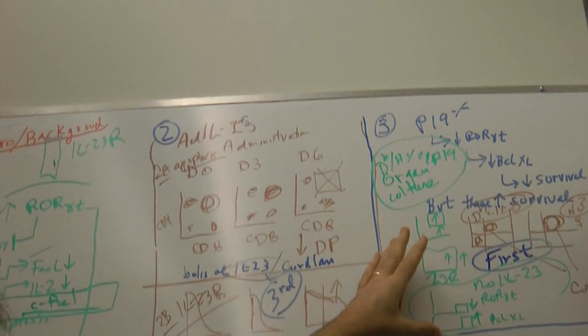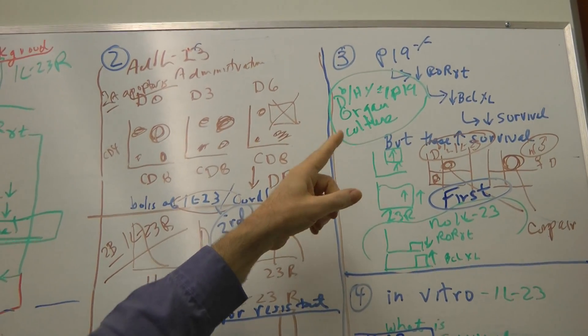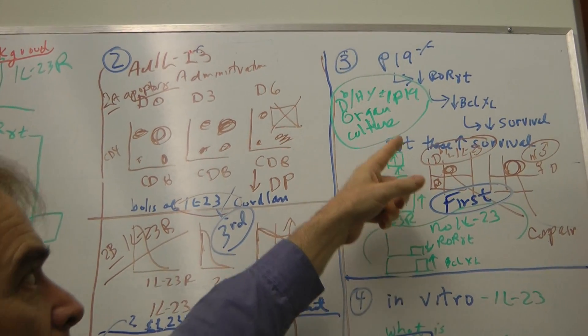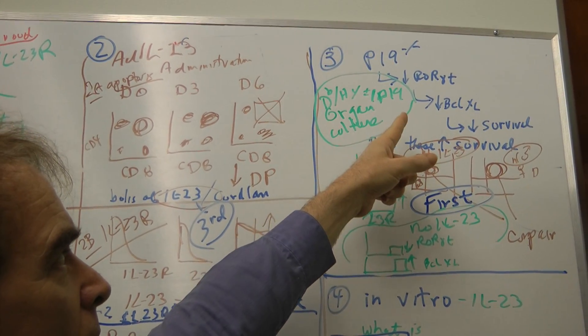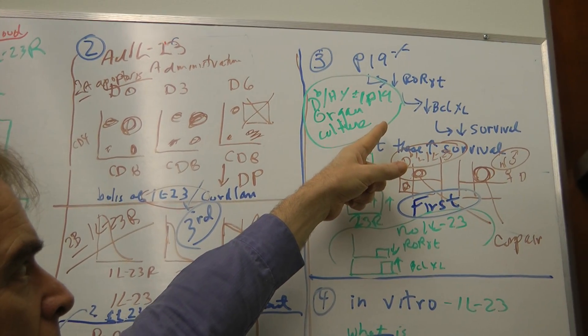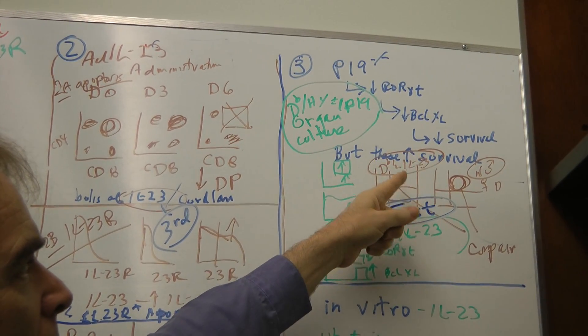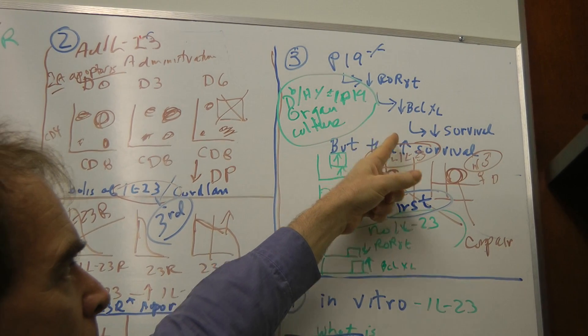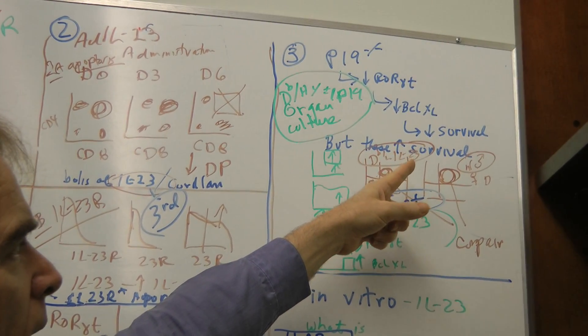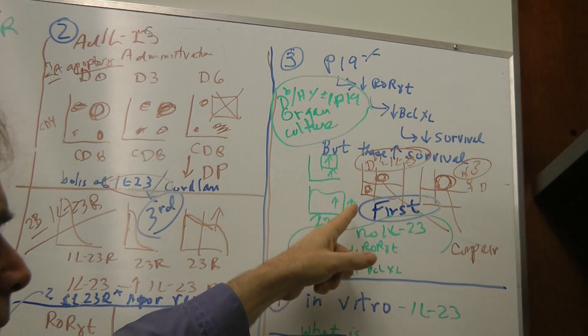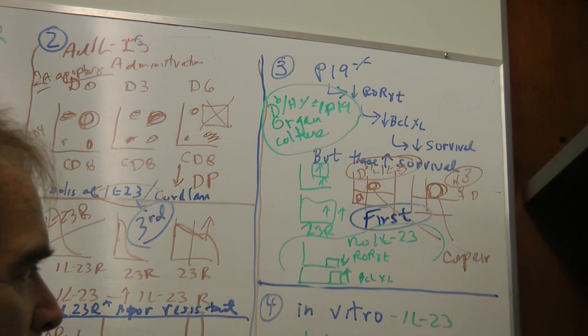Now I'll go over here to the DBHY mouse. That's the second example over here. DBHY P19 knockout. That's the most convincing example because in those mice they don't have P19. They don't have ROR. The ROR gamma T is low. Probably BCL-XL is low. And therefore, wait a minute, then you'd expect low survival. Actually, problem is that what you get is you get high double positives here. You get a negative selection defect.